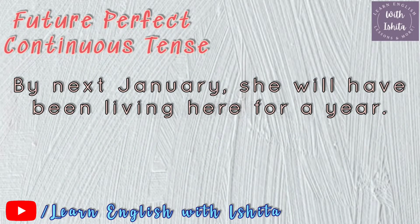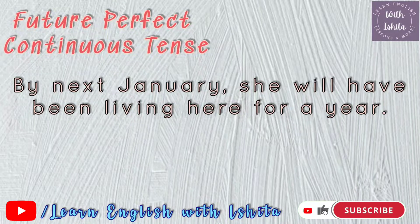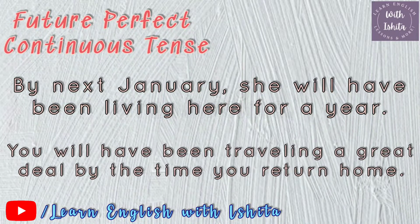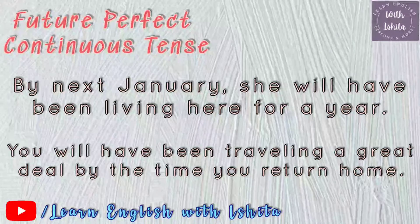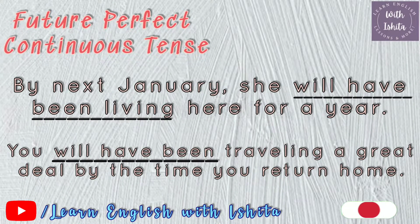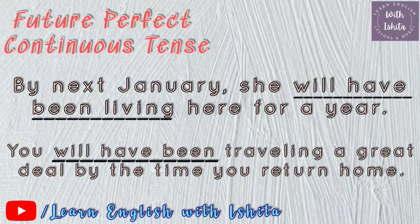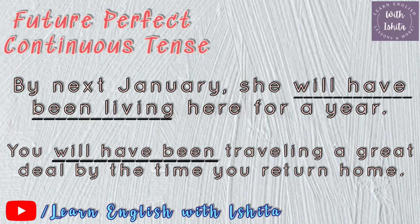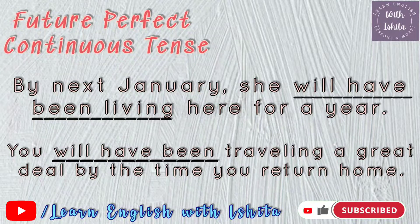Let's look at some examples. Number one: 'By next January, she will have been living here for a year.' Number two: 'You will have been traveling a great deal by the time you return home.' In these sentences, the use of future perfect continuous tense indicates the continuous or ongoing actions of living and traveling — we are thinking about an event in the future and explaining what will have been continuing at that moment.